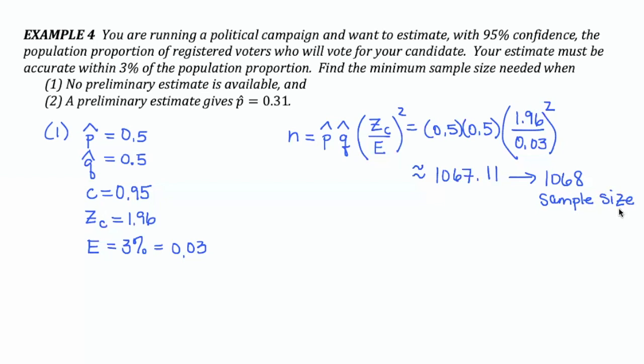In order to guarantee that with 95% confidence, I can determine the population proportion of registered voters who will vote for my candidate within a margin of error of 3%.